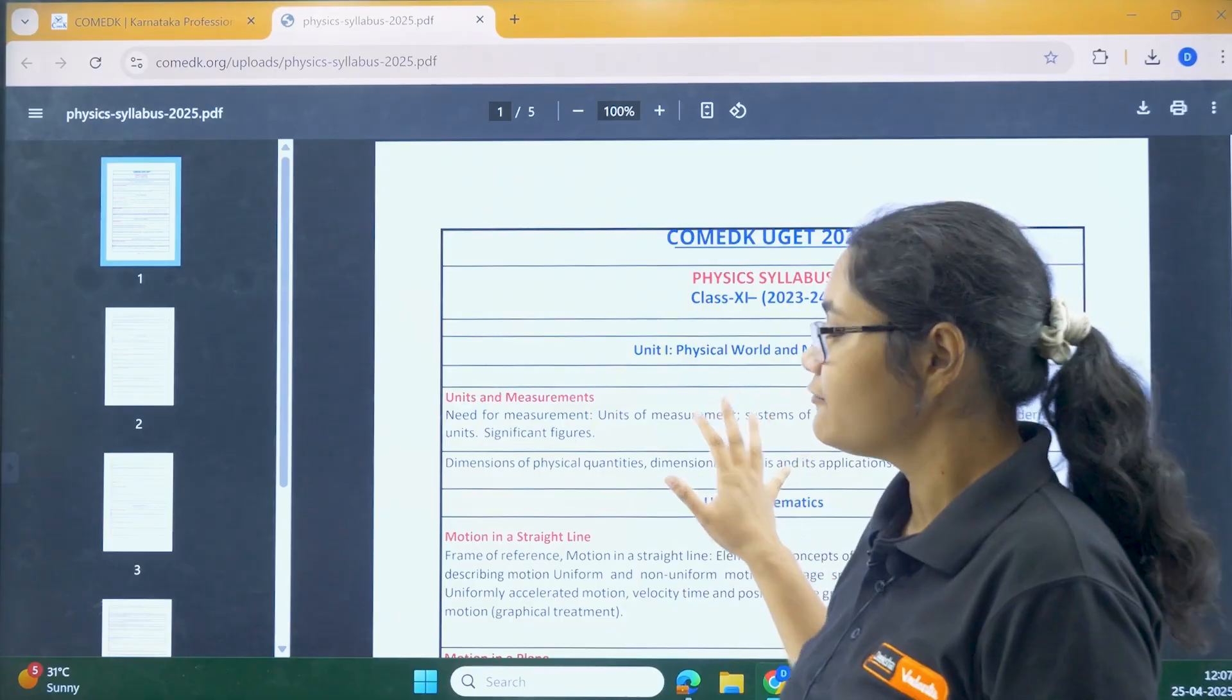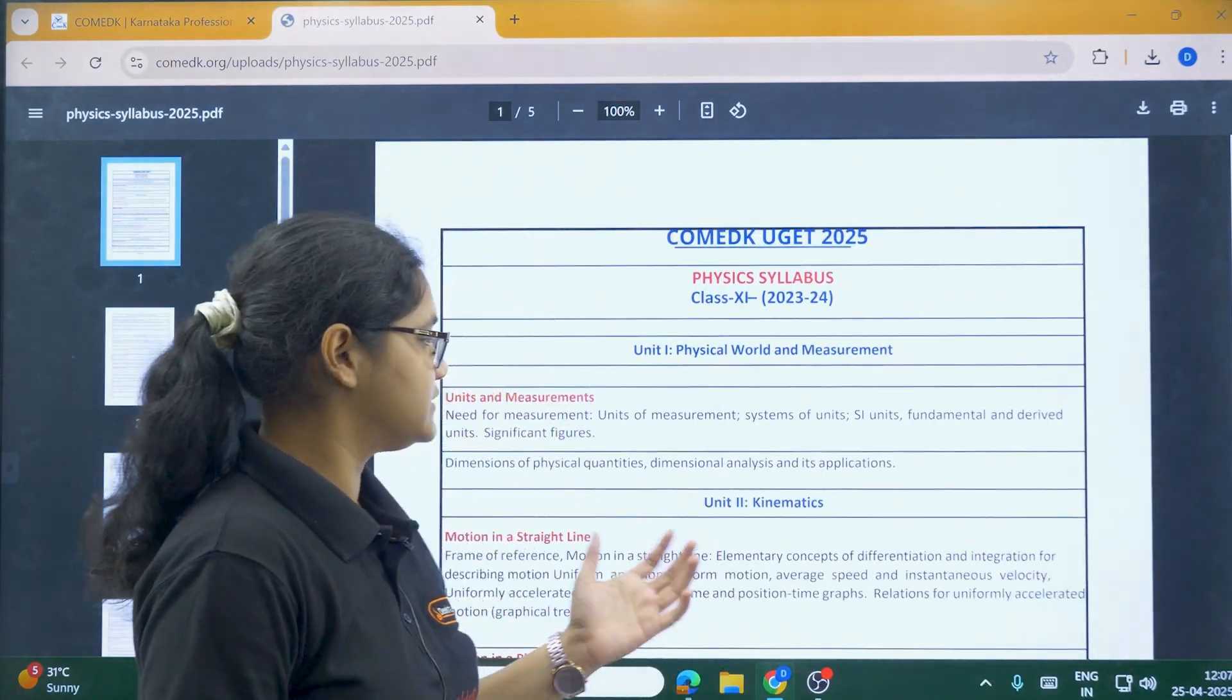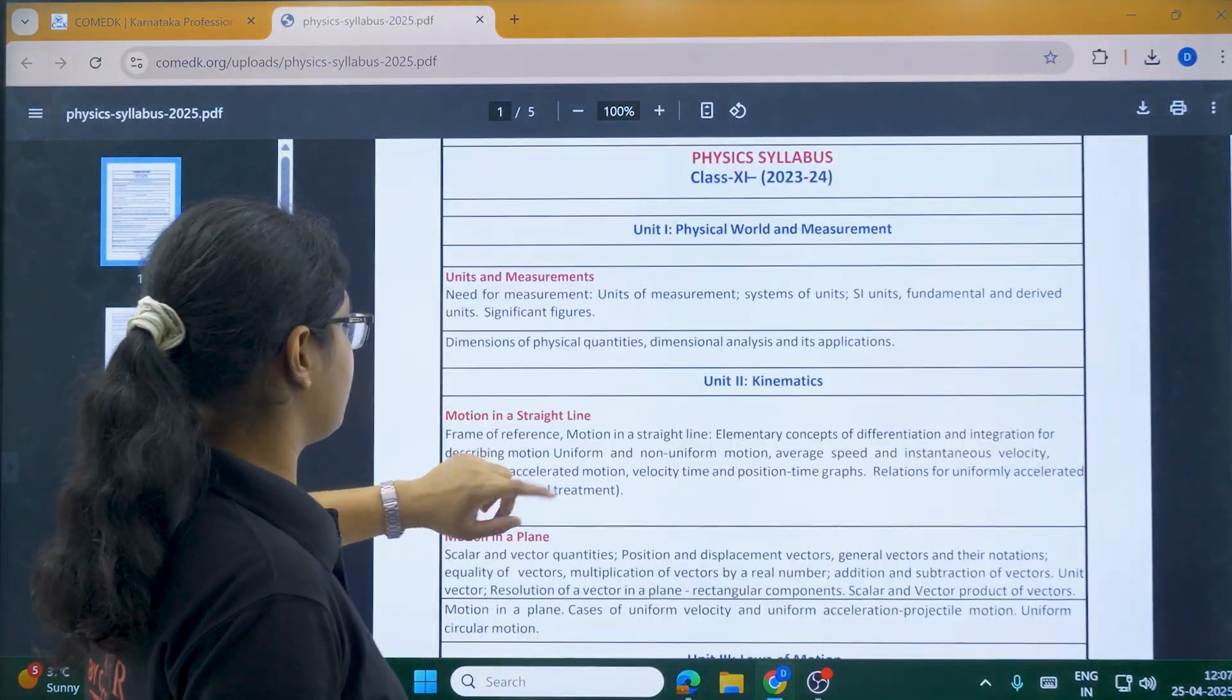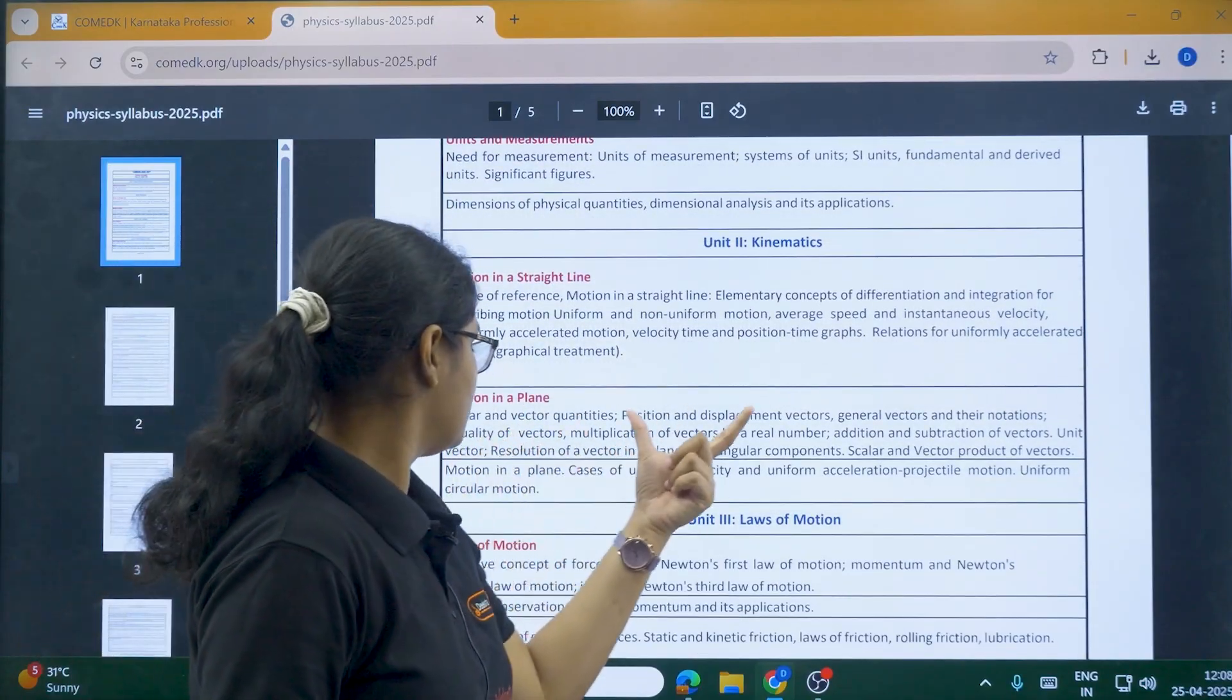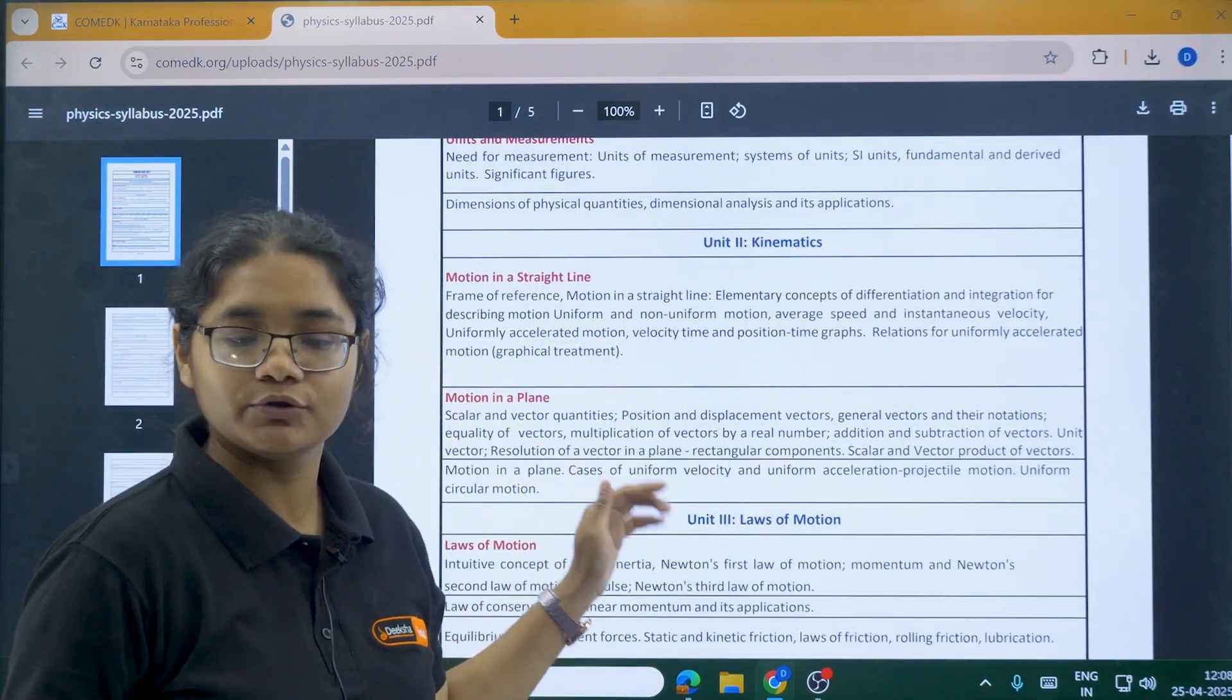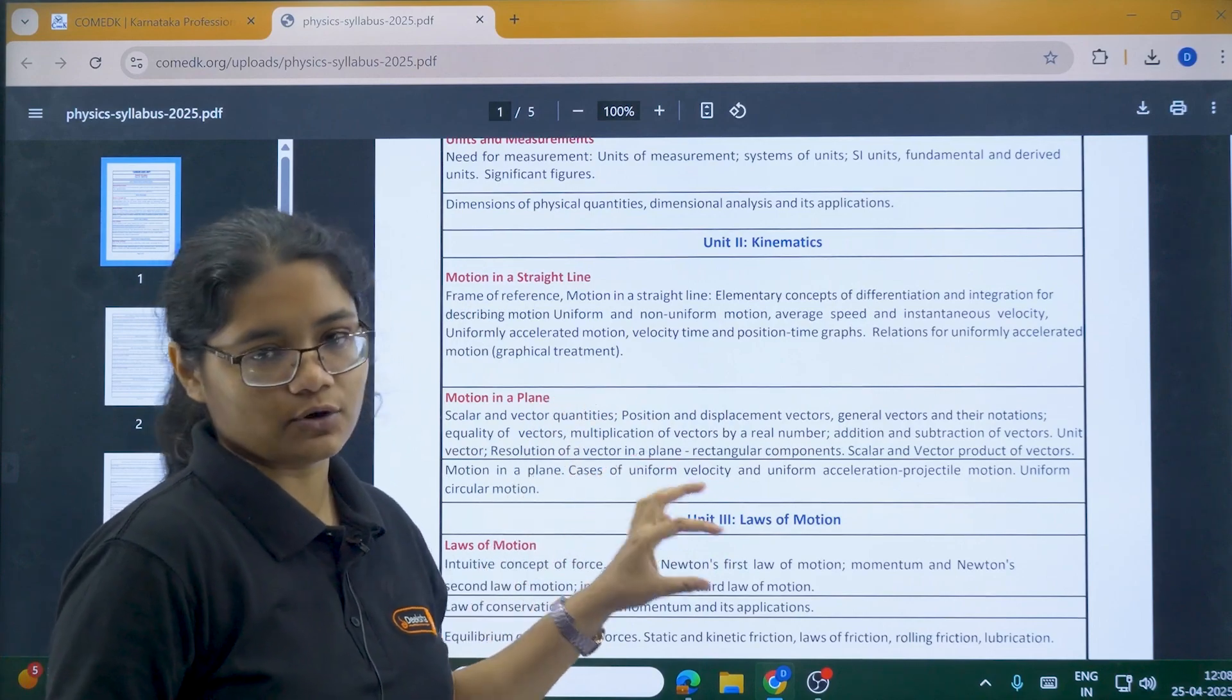For example, if you check the physics syllabus, you can see what topics are there: units and measurements, kinetics, motion in a straight line, and motion in a plane. The specific topics are also mentioned, so you just have to focus on these.